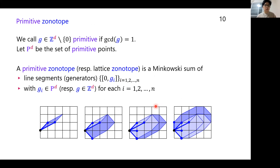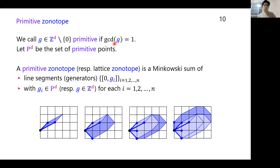Now I'd like to explain the definition of a primitive zonotope. We call a lattice point g primitive if its GCD — the greatest common divisor of the elements of g — equals 1. For example, (1,2,4) has GCD 1, but (2,2,4) has GCD 2.